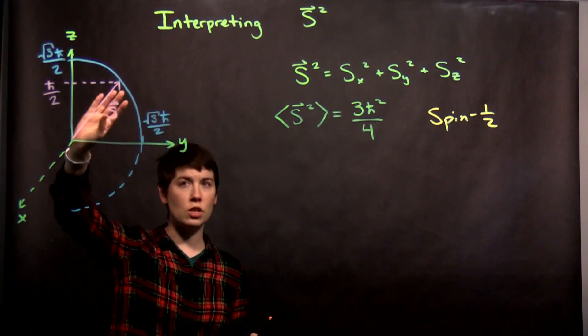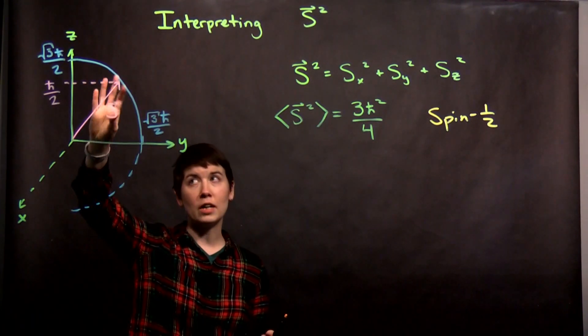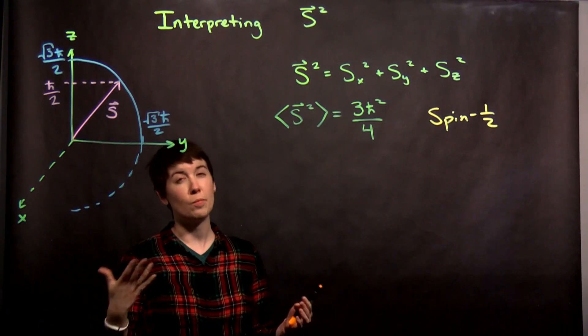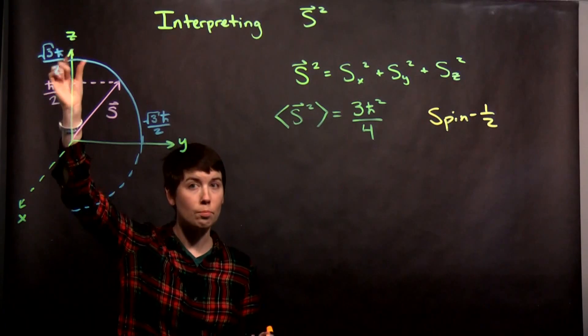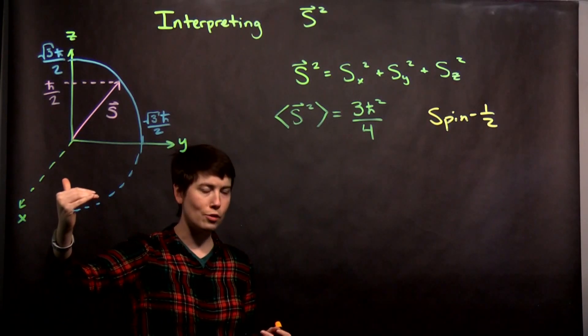So for instance, the projection of our spin vector onto the z-axis if we're measuring is it spin up or spin down in z. Because we know that the two possible values are positive ℏ over 2 or negative ℏ over 2.